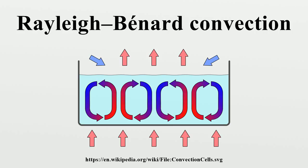Once conduction is established, the microscopic random movement spontaneously becomes ordered on a macroscopic level, forming Bénard convection cells with a characteristic correlation length.